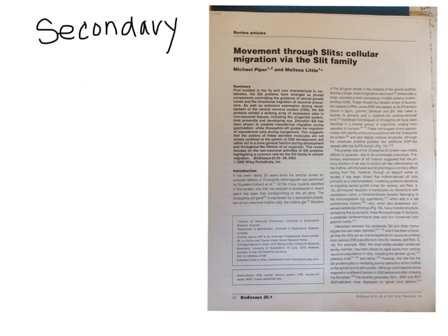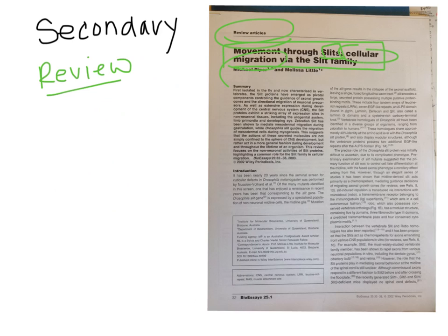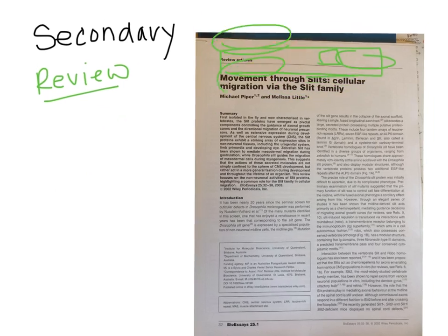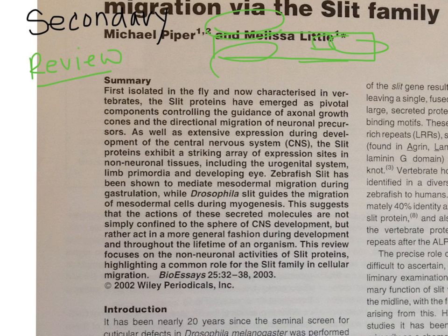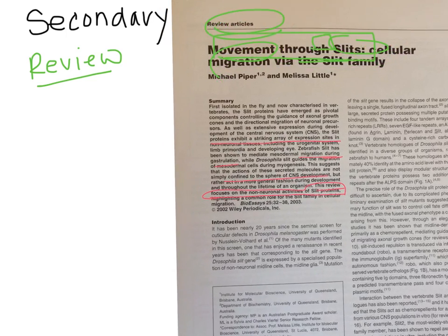Secondary literature, on the other hand, is generally referred to as a review and almost always says 'review' somewhere on it. The title is not specific about one experiment or one conclusion — it talks about how a type of protein works, or how cellular migration happens through this family. If you look at the summary, it doesn't have any specific experiments. It says these proteins do something, they can mediate migration — this review focuses on the activities of the slit proteins, a whole bunch of them. And if you looked through the article, there wouldn't be any new experiments. It's just a review of what's out there.